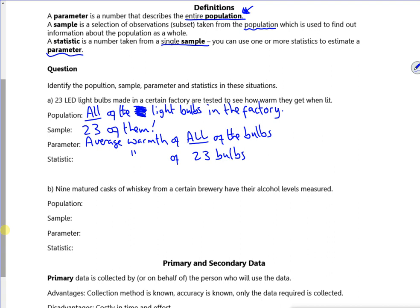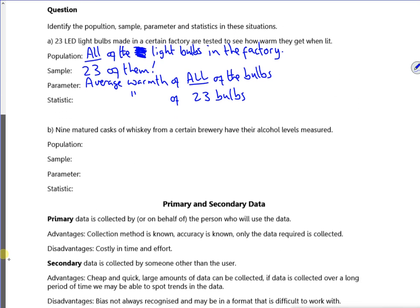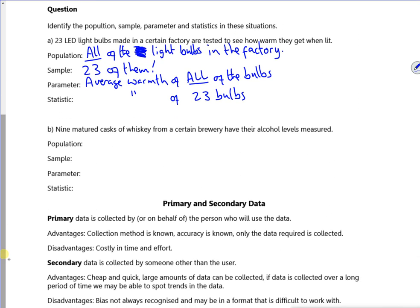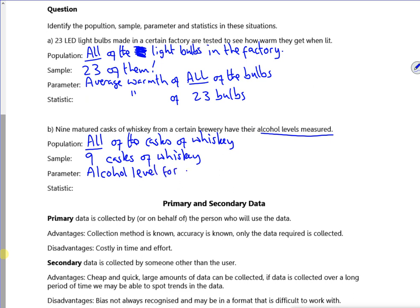We've got nine mature casks of whiskey from a certain brewery have their alcohol levels measured. So the population is all of the casks of whiskey. The sample is the nine casks. The parameter, you're looking at the alcohol level, so the alcohol level for all of them is a parameter, and the statistic is the alcohol level for nine casks of whiskey.